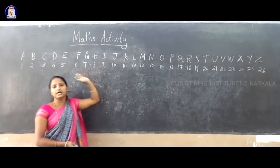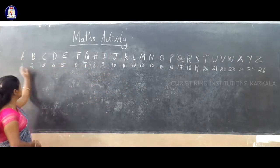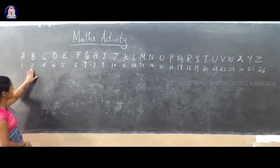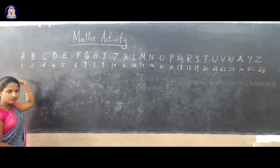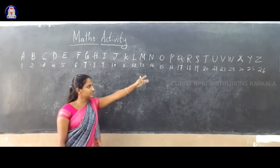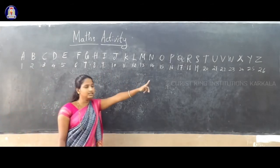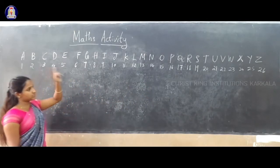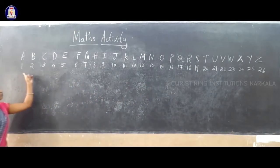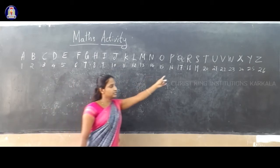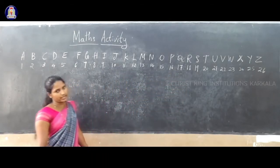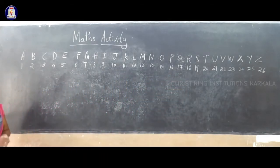Consider A is 1, B is second place, C is third place, D is fourth place — like this. Write 1, 2, 3 up to Z, which gets 26. So A to Z alphabets, then write the numbers. Up to Z that is 26.